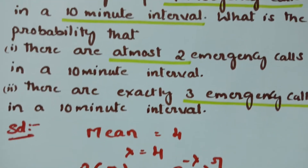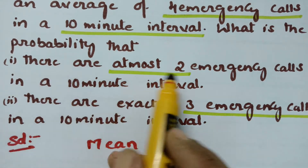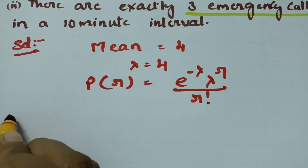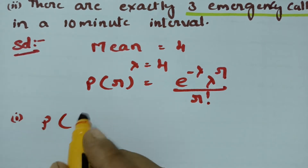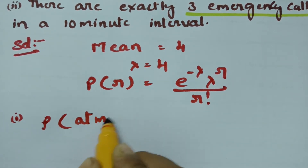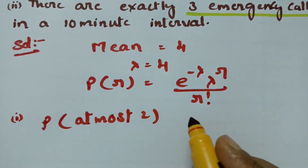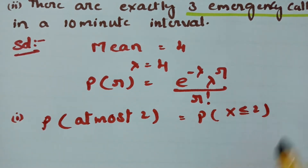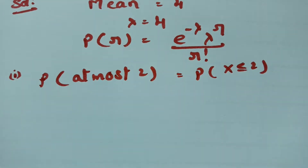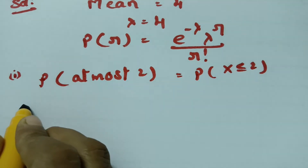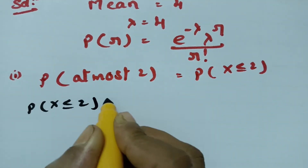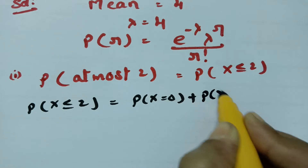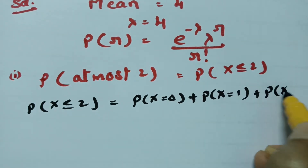First, we have to find the probability that there are at most two emergency calls in a 10-minute interval. At most two means the probability of X less than or equal to 2, which covers X = 0, plus X = 1, plus X = 2.